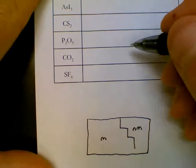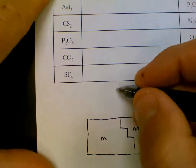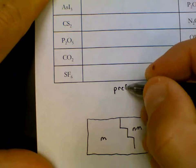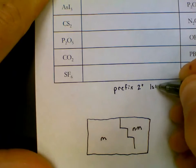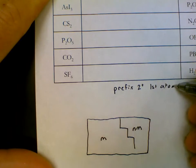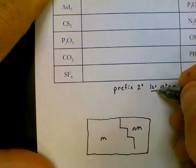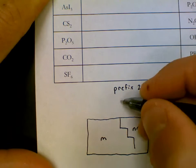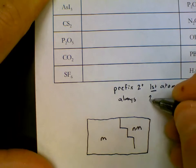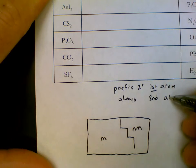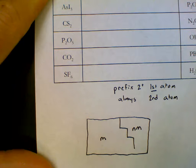Here we care about prefixes. And there is prefix for a subscript of two or more on the first atom. So first atom, always prefix on the second atom. These prefixes you do need to know.